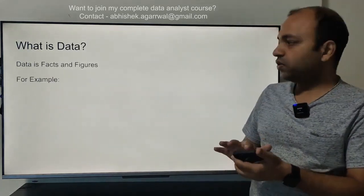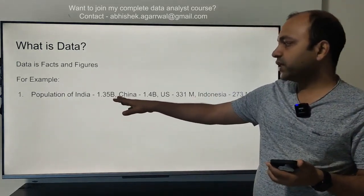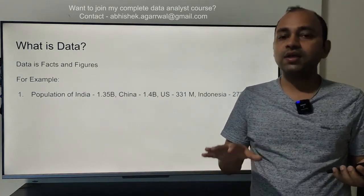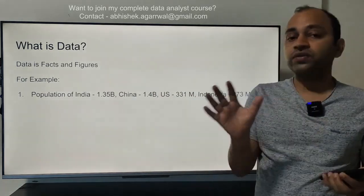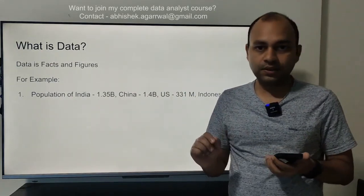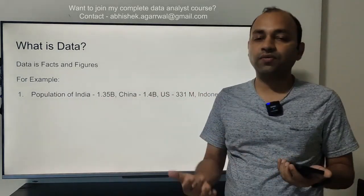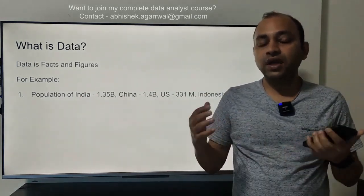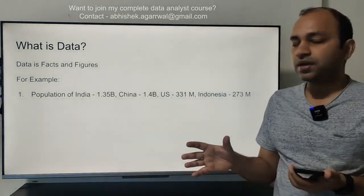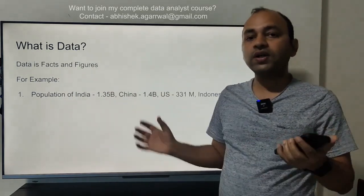The first example is the population of countries: India is 1.35 billion, China 1.4 billion, US 331 million, and Indonesia 273 million. This is one form of data — collecting population figures for various countries. The country names are the facts and the numbers are the figures. In business intelligence there are also terms like dimension and measure, but I'll keep that for advanced BI scenarios.